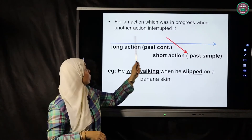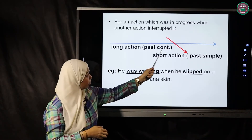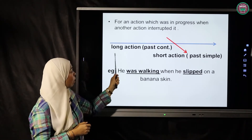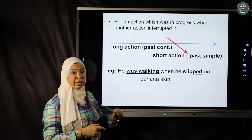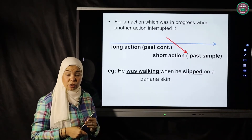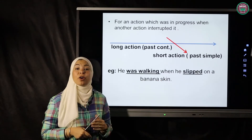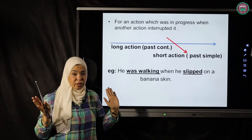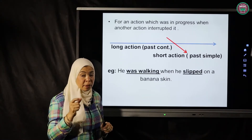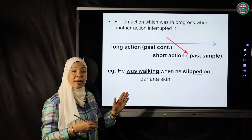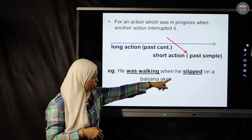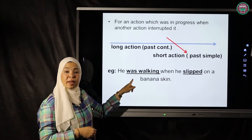Third usage: for an action which was in progress when another action interrupted it. The long action is shown in past continuous — 'He was walking' — then another action interrupted and stopped it. 'When he slipped on a banana skin' — once he slipped, he stopped walking. The short action is expressed in past simple, the long one in past continuous. So: 'He was walking when he slipped on a banana skin.' 'Slipped' is past simple; 'was walking' is past continuous.